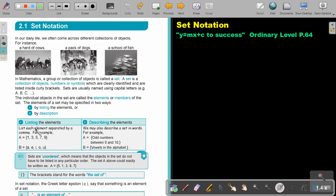Listing the elements: List each element separated by a comma. For example, 1, 3, 5, 7, 9. Or the letters of the alphabet, A, E, I, O, U.